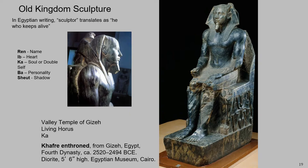Behind him on his head, you will see the god Horus — a god associated with the pharaohs. The living Horus is the pharaoh himself. And we have the protector god shielding him with his wings — he literally has the pharaoh's back, shielding him as a protector god. We have seen Horus already related to the pharaoh when we looked at the Palette of Narmer.